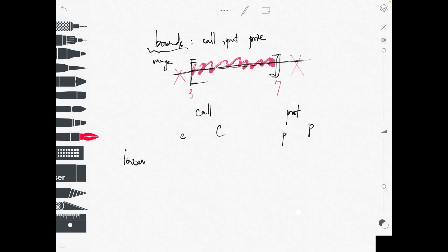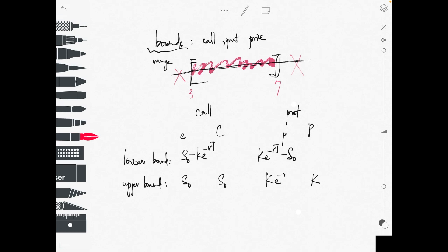For the lower bound, the minimum for the call option is S0 minus K times e to the minus rt. For the put option it is the opposite: K times e to the minus rt minus S0. For the upper bound, the maximum for both European and American calls is S0. For the put, the American upper bound is K and the European upper bound is K times e to the minus rt.